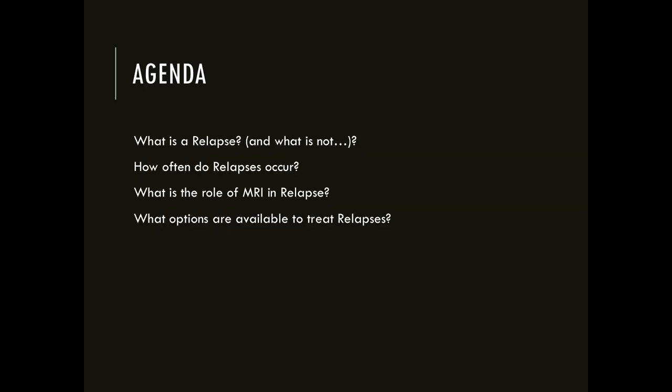The original description of MS as a relapsing condition dates back to Jean-Martin Charcot in the late 1800s. He described relapses as a period of neurological worsening or a new neurologic symptom that occurred after a period of stabilization. Most MS follows a relapsing course and may then go into a progressive form of the illness, with or without additional disease activity.